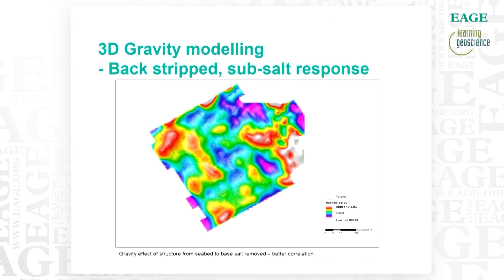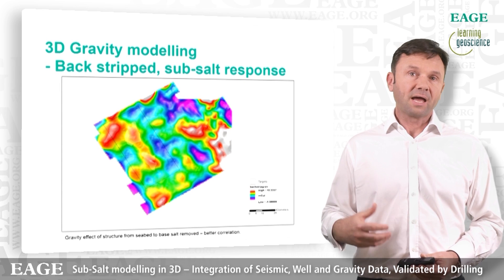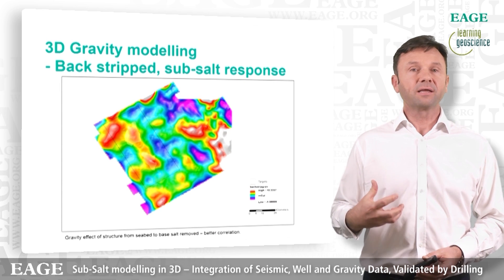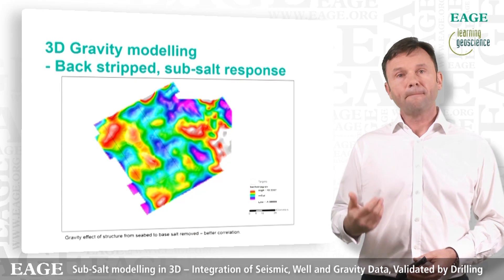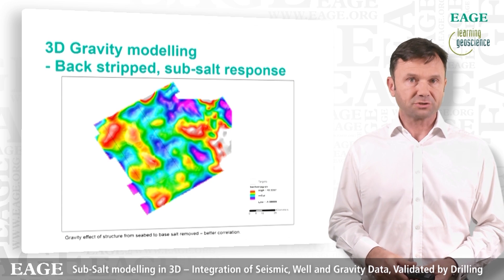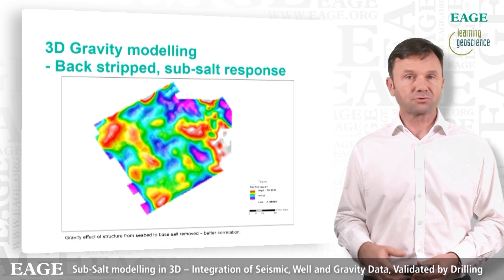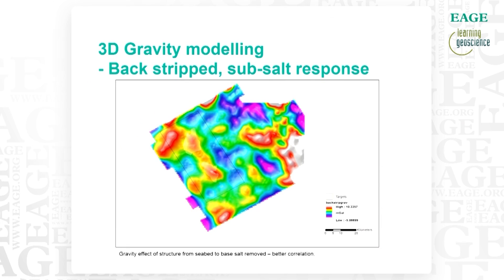If we do that backstripping, we end up with a map where the north and south structures are fairly apparent in our area of interest, and they remain there. This map represents everything we think is going on sub-salt, with all that we know about above the salt removed. This kind of modeling gave more confidence to our interpretation of the sub-salt structure — that there is indeed a structural closure at these locations.